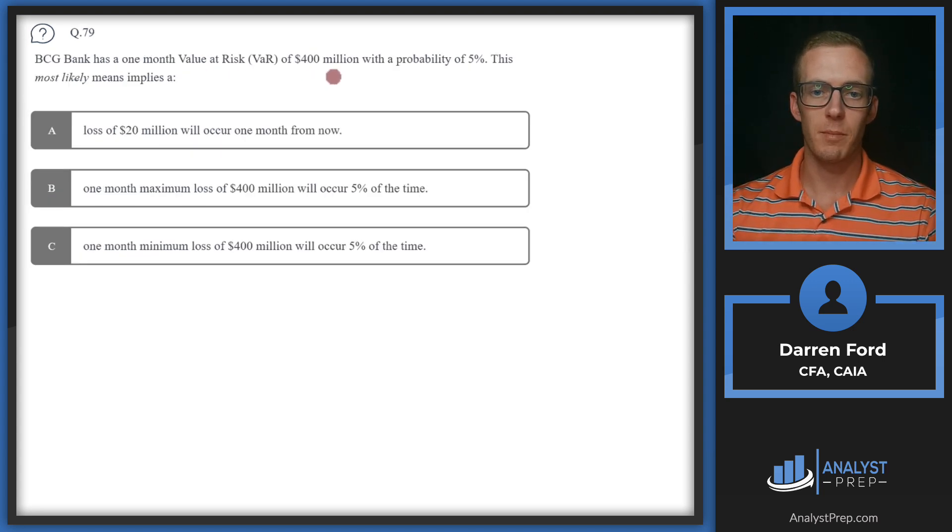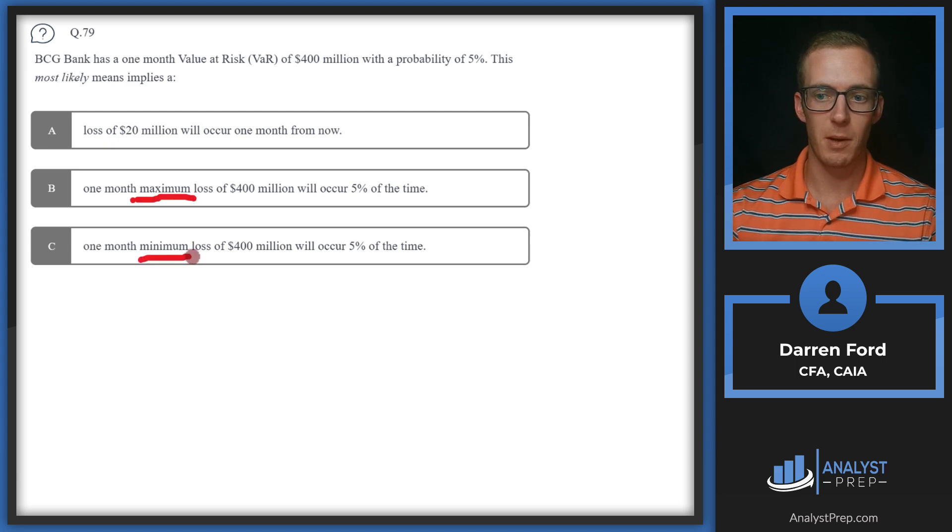Question 79: BCG Bank has a one-month Value at Risk of $400 million with a probability of 5%. This most likely implies: A: a loss of $20 million will occur one month from now; B: one month maximum loss of $400 million will occur 5% of the time; or C: one month minimum loss of $400 million will occur 5% of the time. The only difference between B and C is maximum versus minimum.